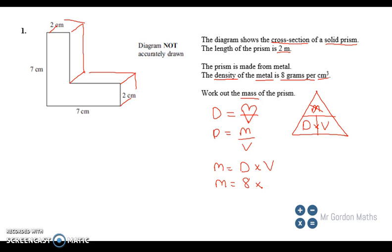So we need to work out the volume of this prism. Volume of a prism is the cross section times the length—the area, sorry—area of the cross section times the length.